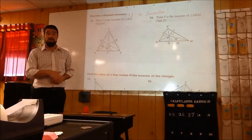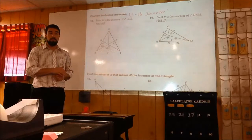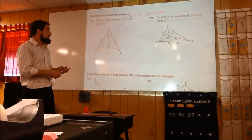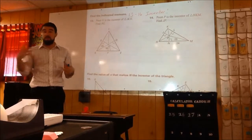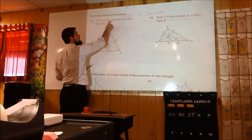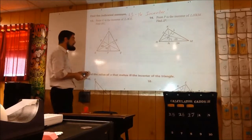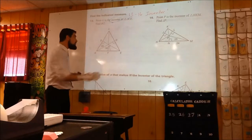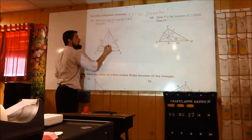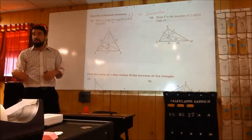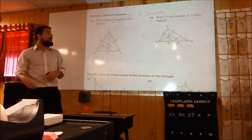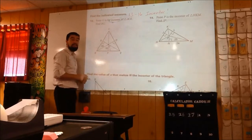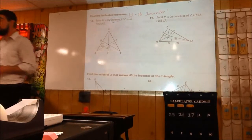We talked about number 13. You need to be able to interpret these diagrams and go based off of the given information. It clearly says that this is the in-center — point G is the in-center. That's where all of your angle bisectors meet. One of the notes you should have is that the in-center is equidistant from all three sides of the triangle.